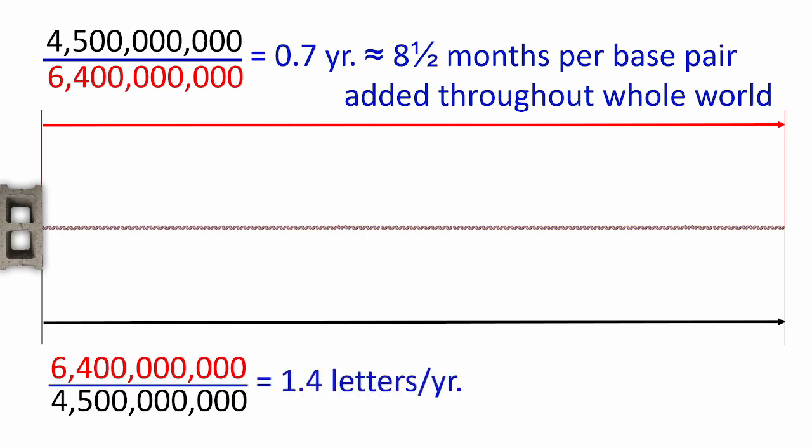This is the minimum average rate that the genome is supposedly writing itself. If you are 20 years old, in your lifetime, 28 new letters were added throughout the human genome around the entire planet, but you missed them. You didn't get them, right? How did you get them?